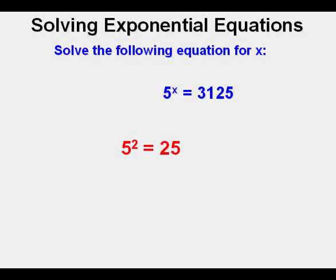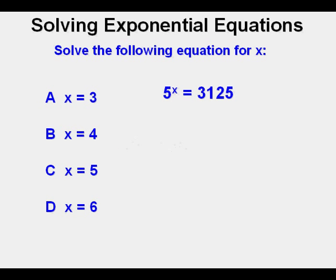If we substitute 2 for x, we get 5 to the second power or 5 squared, which equals 25, not the right answer. If we substitute 3 for x, we get 5 to the third power or 5 cubed, which equals 125, also not the answer. We could keep on going in the same direction with this until we find what x is.